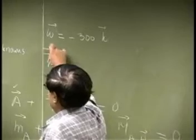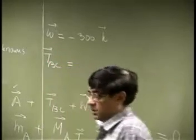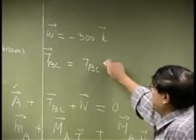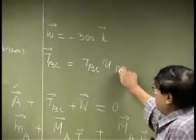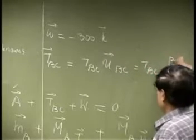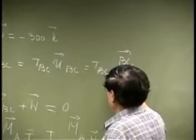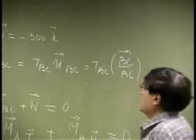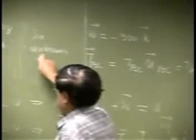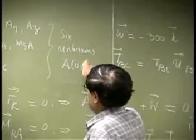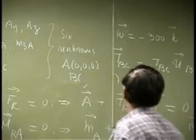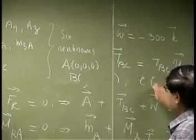Then TBC, since we need this and this is going to be the unknown magnitude and a unit vector going from B to C. So you get TBC, you go BC over BC. That means we need coordinates for, I mean A is known. A is simply 0, 0, 0. We need the coordinates of B and we need the coordinates of C.